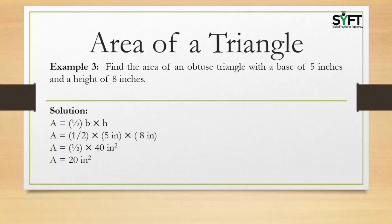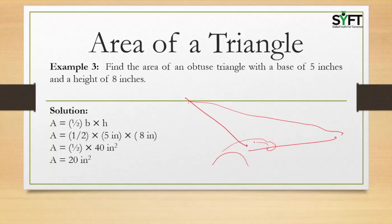Find the area of an obtuse triangle with a base of 5 inches and a height of 8 inches. An obtuse angle triangle means one angle must be more than 90 degrees. The height is drawn as shown.